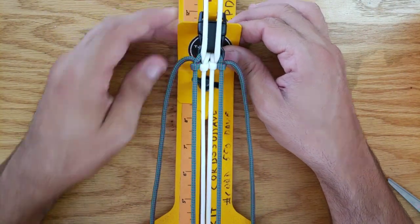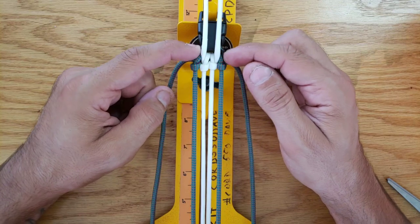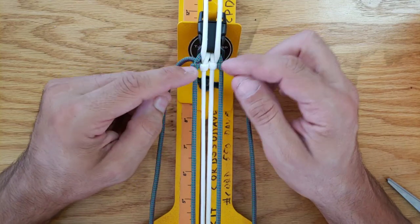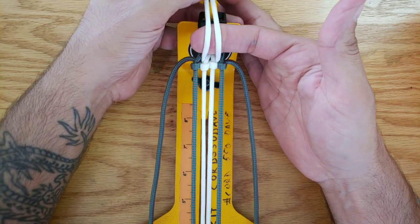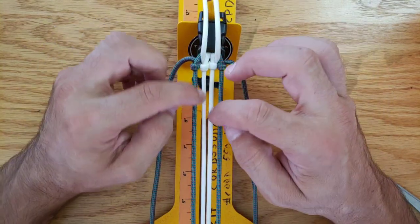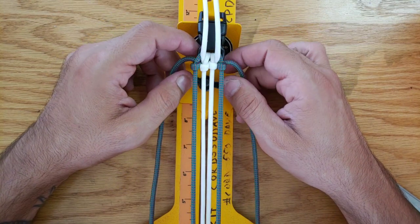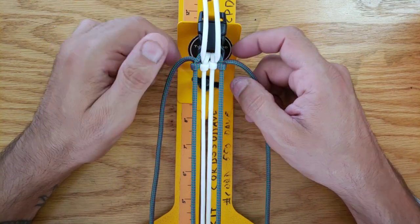Then you go up top and run them through the buckle and loop them over, making sure your center cords come up between cords one and two and three and four. Alright, let's get started.